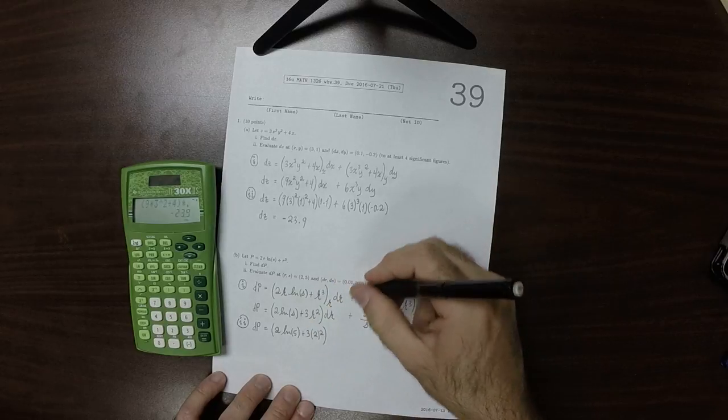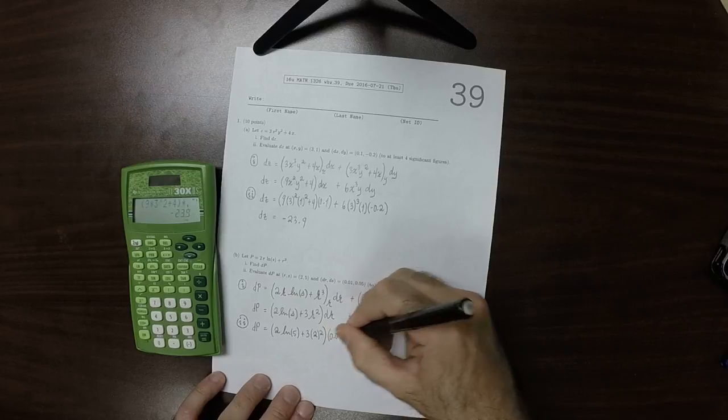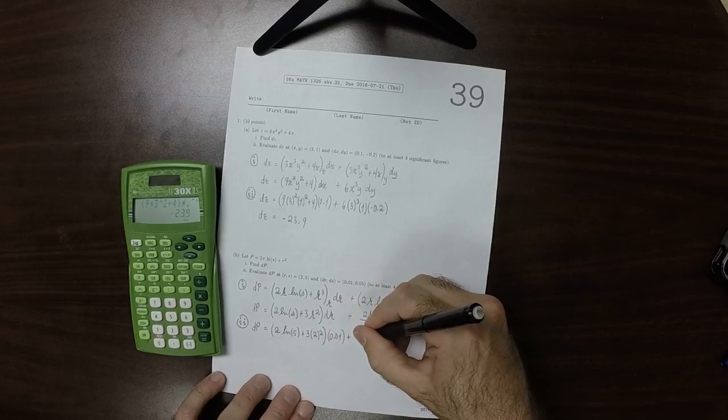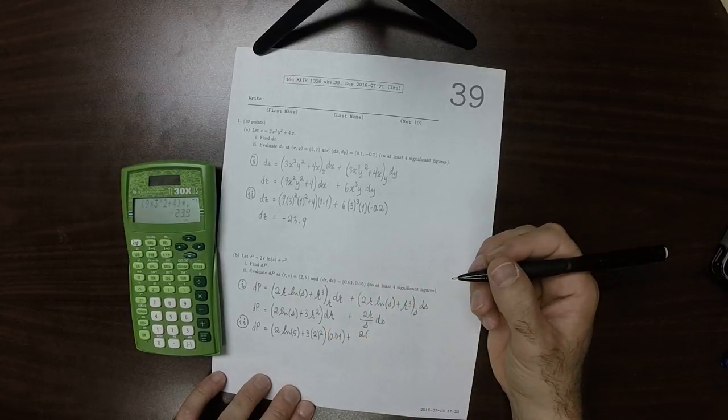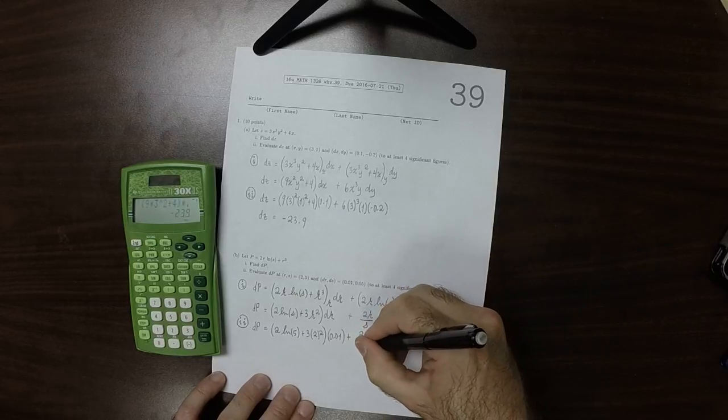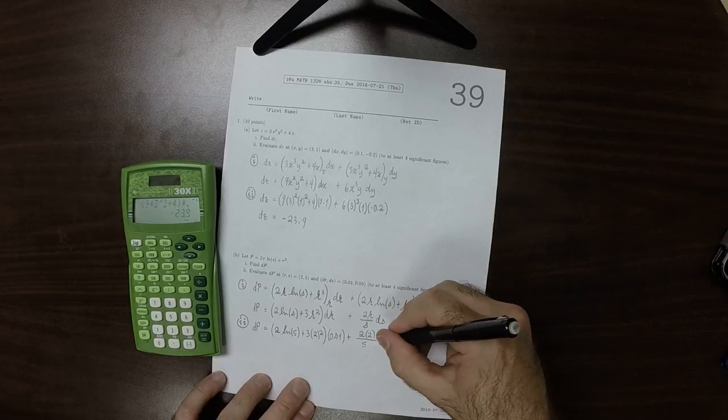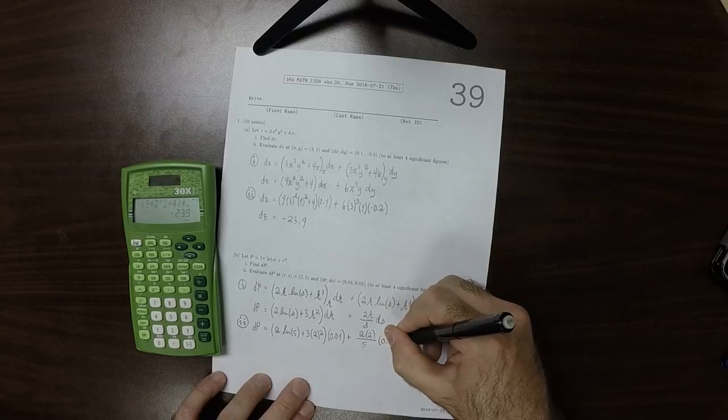And then dr is 0.01, plus 2 times r which is 2, divided by s which is 5, times ds which is 0.05.